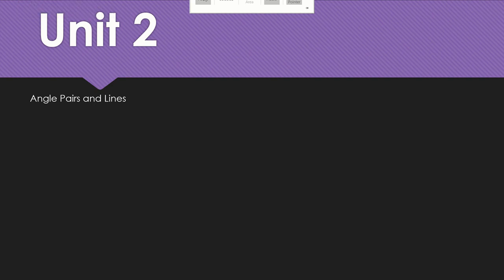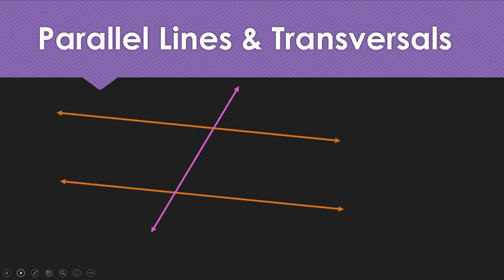Today we're going to talk about angle pairs and parallel lines. Just like yesterday, we're going to start off with our transversal. Remember, a transversal is a line that goes through two lines. The only difference now is that the two lines it goes through are parallel. So if we call this line l and line m...